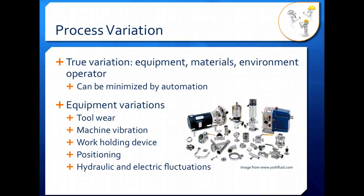True variation in a process comes from four different sources: equipment, materials, environment, and operators. This variation can be minimized by automation, but you can't ever really completely get rid of it. It's just something that's there, going to occur in your process. The best you can do is control it.